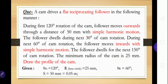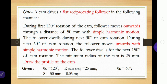The question is: a cam drives a flat reciprocating follower in the following manner. In every question, take care of which type of follower is there and which type of motion it is following during outstroke and return stroke. It is a flat face follower. During the first 120 degrees of cam rotation the follower moves outward through a distance of 50 mm, meaning theta-o equals 120 degrees and the stroke S equals 50 mm, with simple harmonic motion during outstroke.